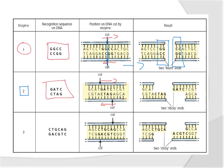Enzyme two recognizes the sequence GATC running one way and GATC running the other way. The enzyme makes its cut at the G point, but since the G is in a different position on each strand, the cut is not straight across - it's a staggered cut. This results in sticky ends, where the two ends of the DNA stick out without the corresponding bases on the other side. Enzyme three similarly cuts between the A and G, also producing sticky ends.